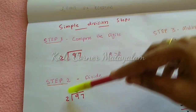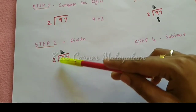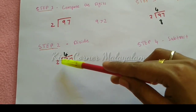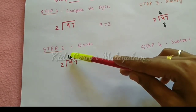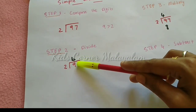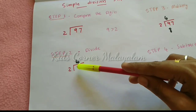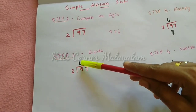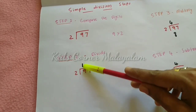Step 2: Divide. 9 divided by 2. We divide the two-digit number. 9 divided by 2 gives us 4. We will answer 4.